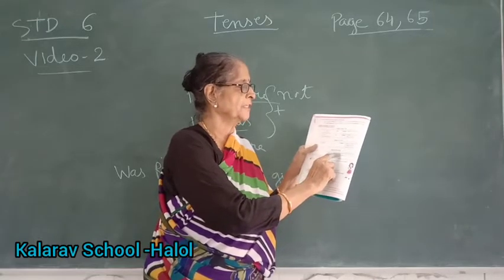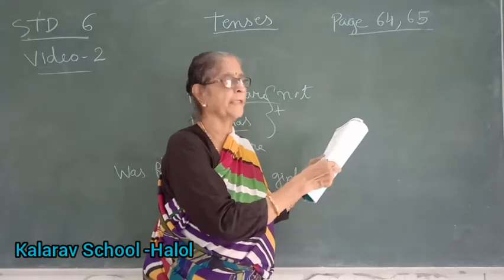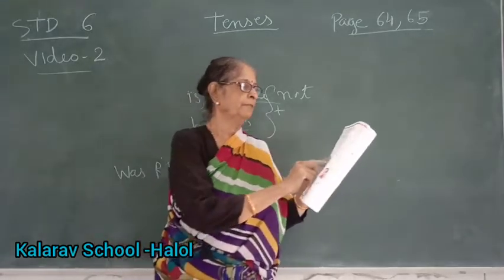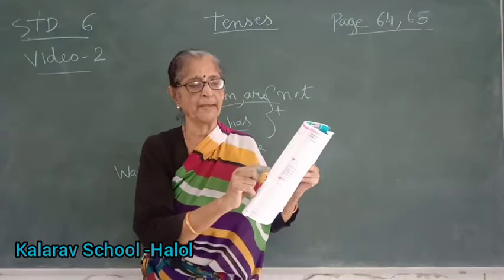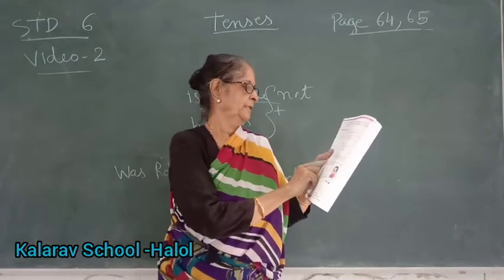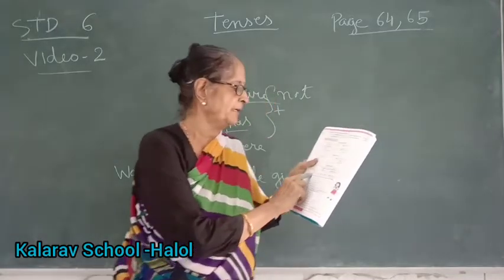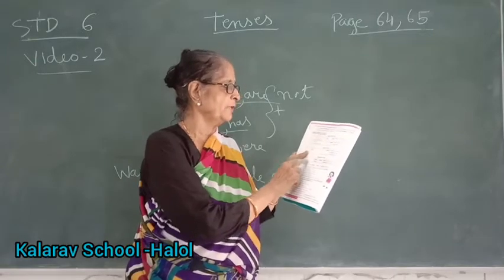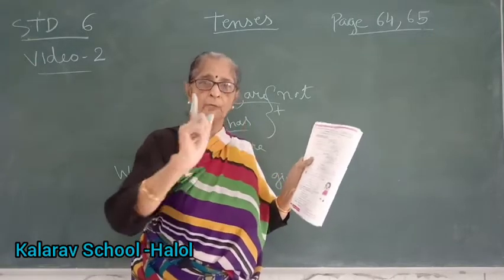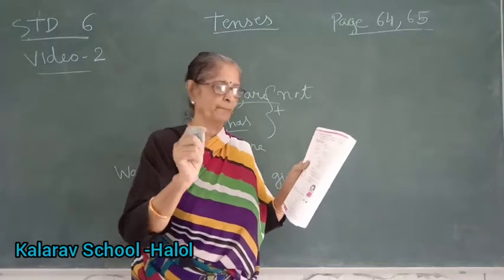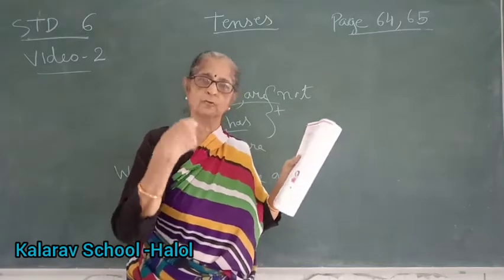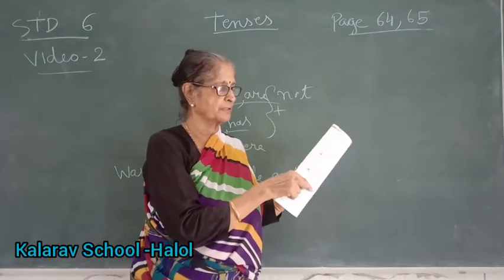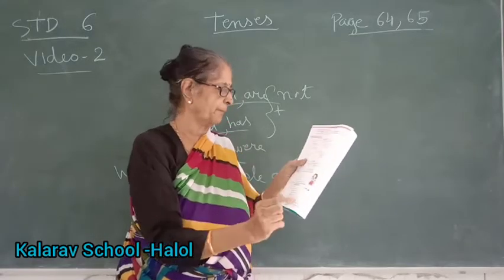Example: 'I shall have finished the work by 8 p.m.' 'We will have left the town by next week.' Only with I and we can we use 'shall', but now 'will' is also used. Example: 'You will have reached the station by 6 a.m.'